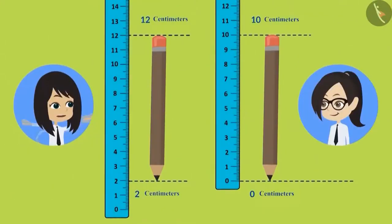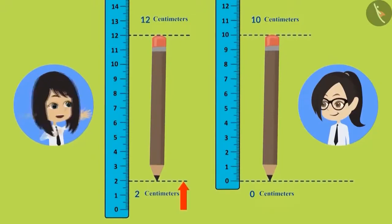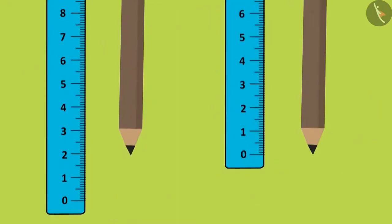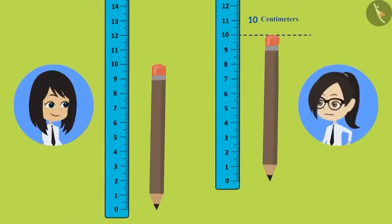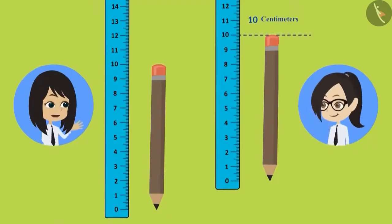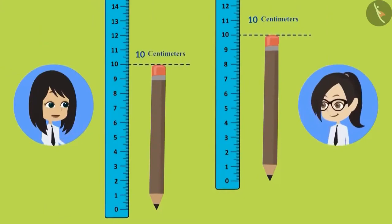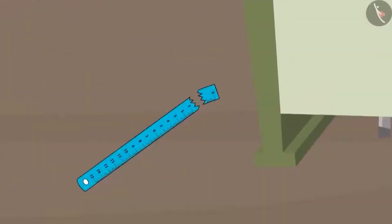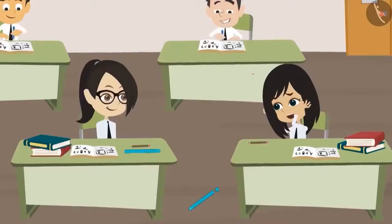They compare their measuring techniques. Neha points out that Vandana placed the bottom of her pencil at 2 centimeters on the scale, while Neha placed hers at 0 centimeters. Vandana asks what difference that makes. Neha explains it leads to incorrect measurements — to measure correctly, the lower end of the object must be placed at 0.